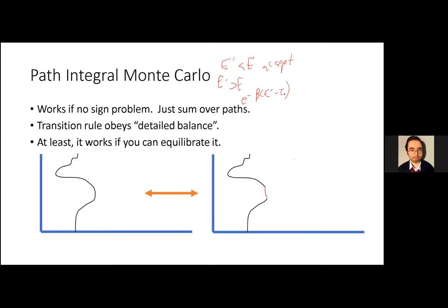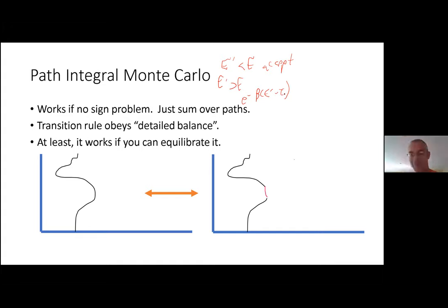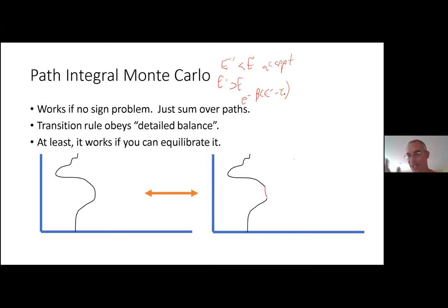Similarly in quantum mechanics, instead of accepting or rejecting a spin flip, you accept or reject small changes in the paths. This will work if you can equilibrate the Markov process — the stationary distribution of the Markov chain should be the desired probability distribution. But you might not get there: you might get stuck in some local energy minimum where you can't properly equilibrate.